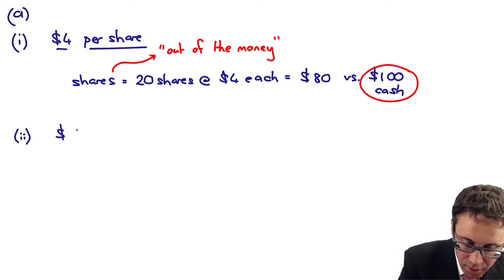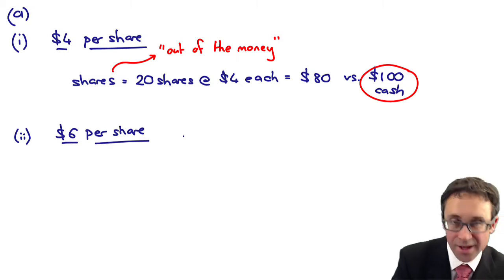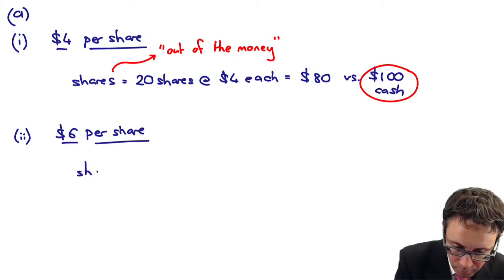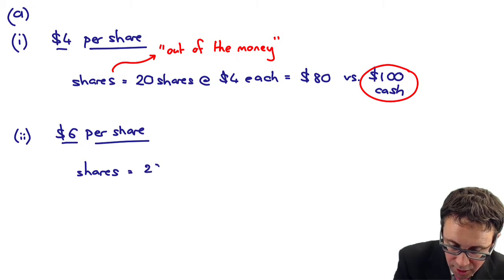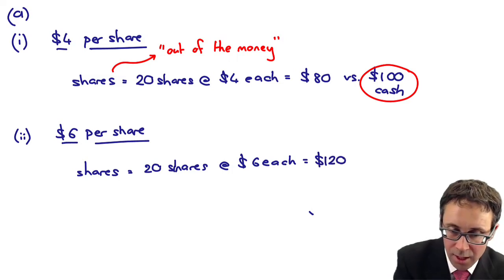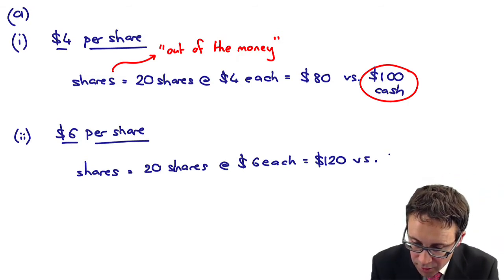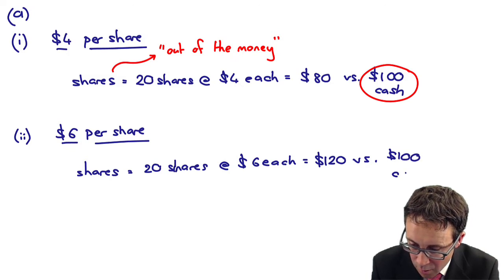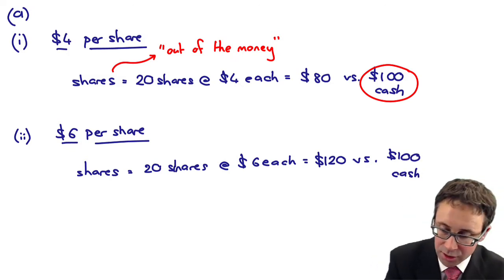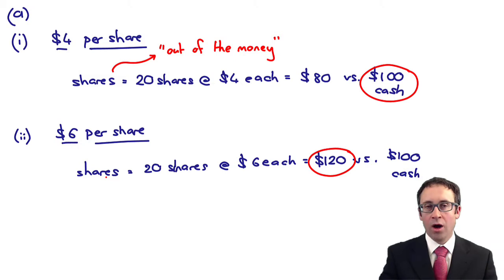Scenario two is whereby it is $6 per share. I think you can guess what's going to happen, but the value of the shares is 20 shares at $6 each, which is $120, versus the same option of $100 cash.